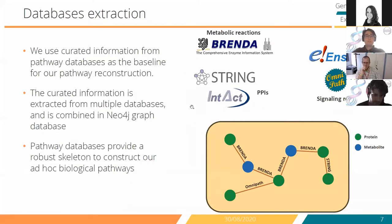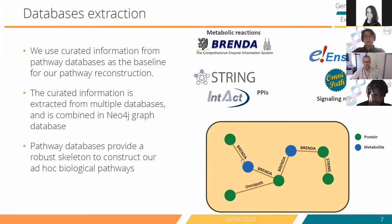This information is included in Neo4j where proteins and metabolites are labeled accordingly, and information present in the database — such as the enzyme driving the reaction — are stored as node properties. Proteins and metabolites are assigned stable IDs, which are UniProt and ChEBI IDs respectively, to allow retrieval of the information from Neo4j. The combination of these databases provides a very robust skeleton in which to construct the pathways of interest.